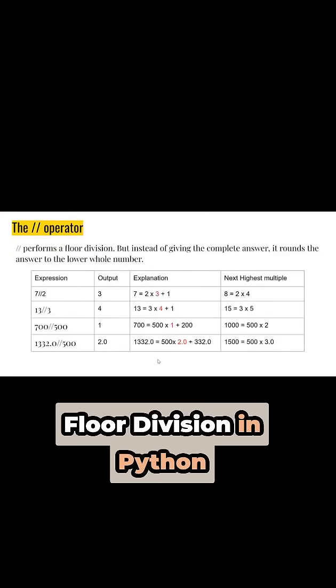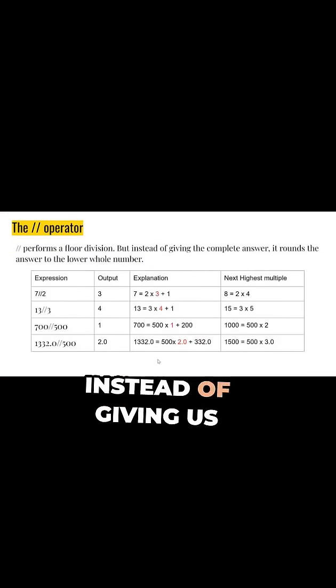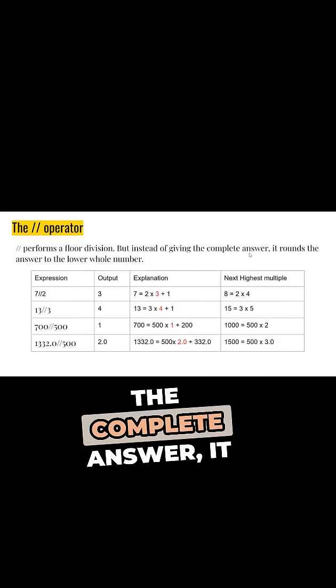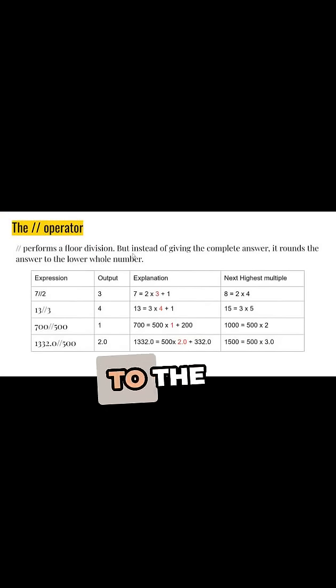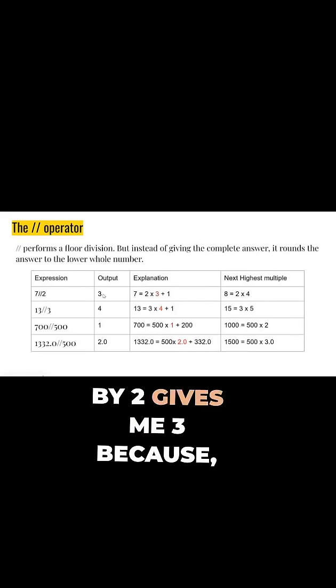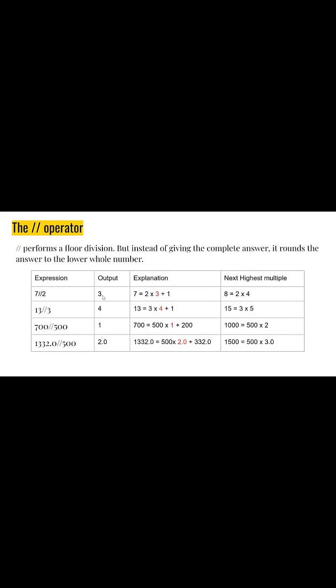Floor division is like regular division, but instead of giving us the complete answer, it rounds the answer to the lower whole number. Let's take an example: 7 floor division by 2 gives me 3, because if I divided 7 by 2, I'm going to get 3.5.